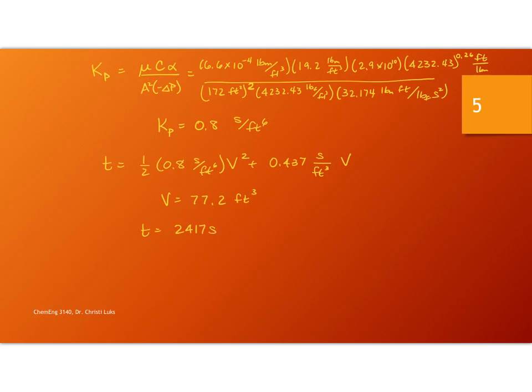And recall, our rule of thumb is keep converting to larger and larger time units until you get something that pretty much anyone would know just really what that means. In this case, 1 minute is 60 seconds. This is about 40 minutes.